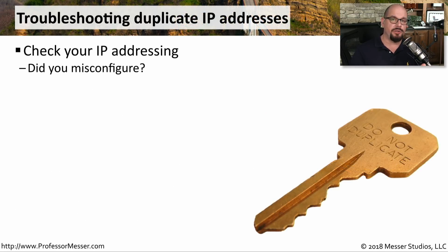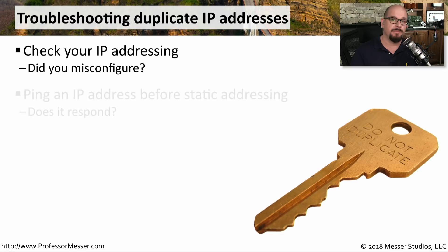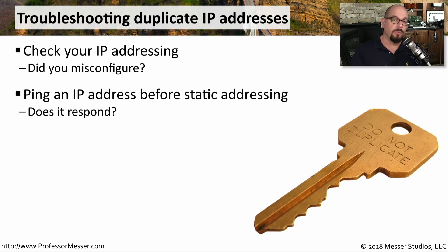To troubleshoot duplicate IP addresses, start with devices that are being manually configured. Check the IP address, subnet mask, and default gateway for your workstation and make sure it matches your documentation. Before bringing a station online, use a third station to ping that IP address and see if another device responds. If another device responds, you know that IP address should not be manually configured on another device.